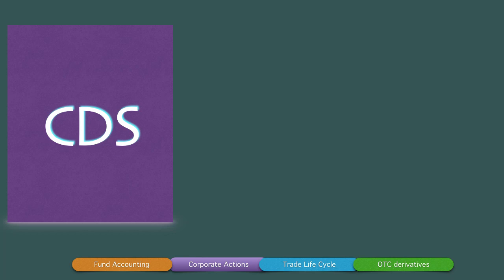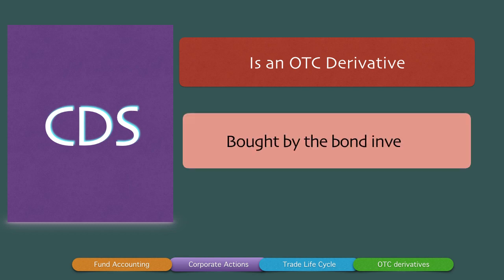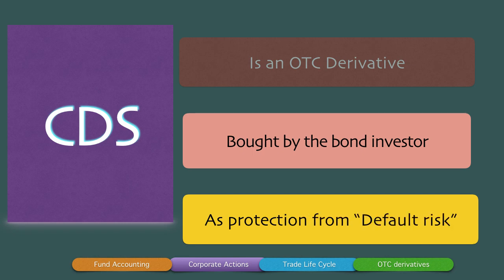A credit default swap is therefore an OTC derivative — over-the-counter — completely customized to meet the requirements of the two counterparties. In a credit default swap, there will be two parties exchanging only the cash flows at the time of contractual dates. A credit default swap is bought by the bond investor as a protection from the default risk that the investor suffers from.